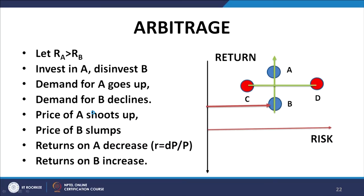Then we discussed the diagram of arbitrage. If asset A is providing a higher expected return compared to asset B for the same level of risk, this would not be sustainable in equilibrium. People would sell off asset B and buy asset A, increasing demand for A and decreasing demand for B, resulting in the price of A increasing and price of B decreasing — the return on A decreasing and return of B increasing — until they converge.